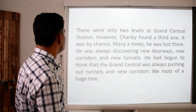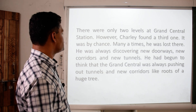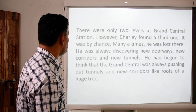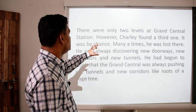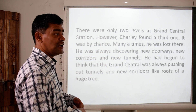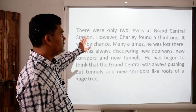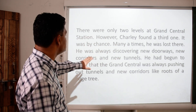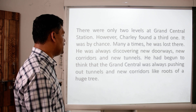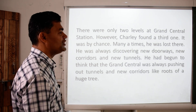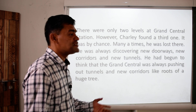There were only two levels at Grand Central Station; however, Charlie found a third one. It was by chance — many times he was lost there, always discovering new doorways, new corridors, and new tunnels. As he is lost in his own dream world of the third level, he always finds himself exploring new ways and tunnels. He had begun to think that the Grand Central was always pushing out tunnels and new corridors like roots of a huge tree.